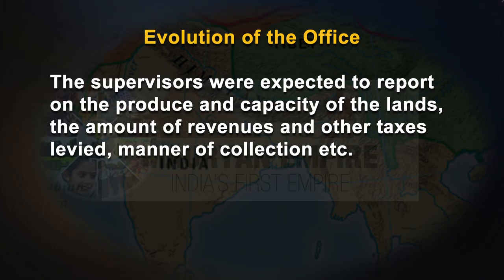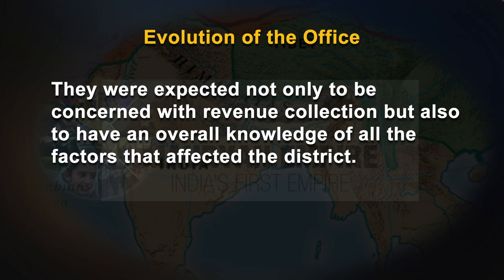The East India Company appointed covenanted servants as supervisors during 1769–70 in the districts of the Diwani provinces. The supervisors were expected to report on the produce and capacity of the lands, the amount of revenues and other taxes levied, and the manner of collection. They were expected to have an overall knowledge of all factors that affected the district. But the system failed, and the company decided in 1772 to take over the entire executive management of public revenues. Accordingly, Warren Hastings issued a proclamation on May 11, 1772, and the supervisors were appointed as collectors. Thus, the institution of the Collector was created for the first time in 1772 during the period of Warren Hastings, and collection of revenue became the most important duty of the company's civil servants.